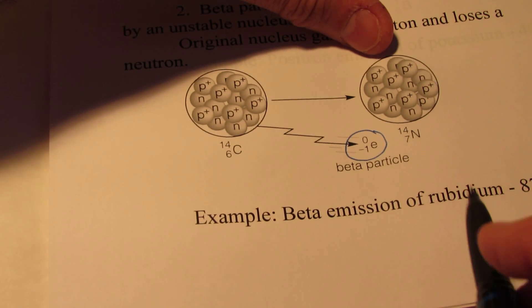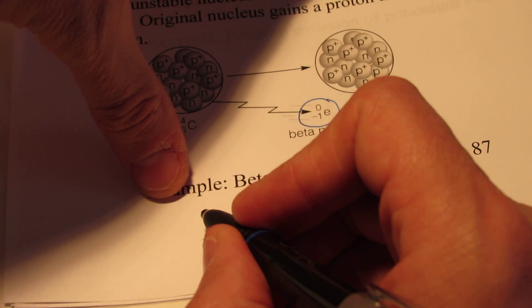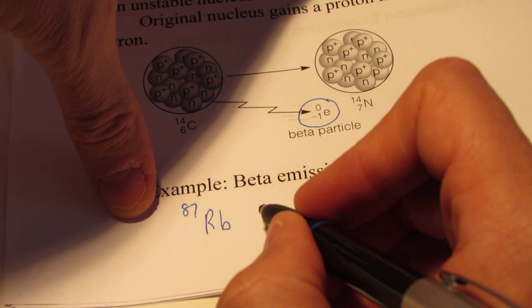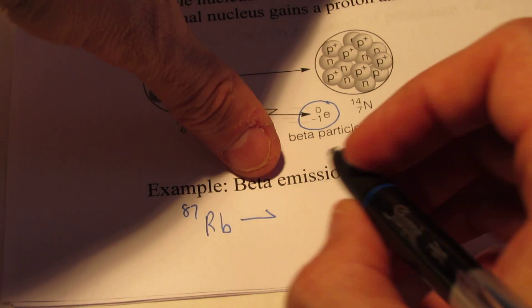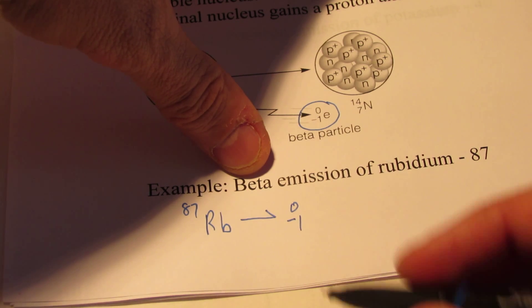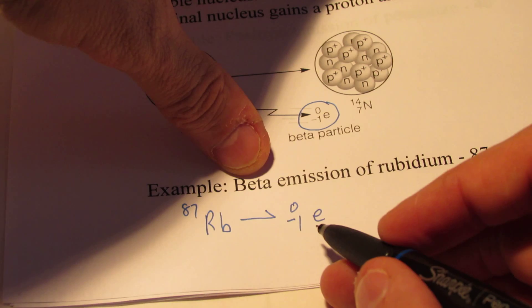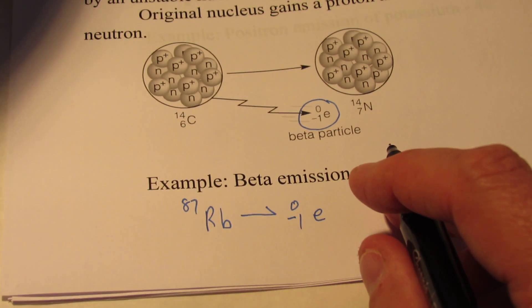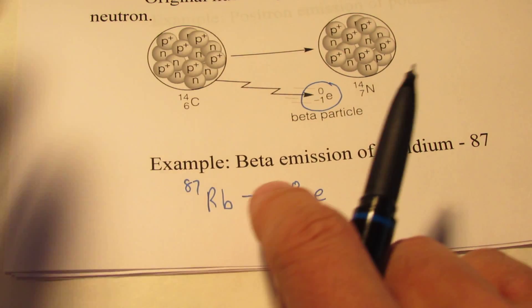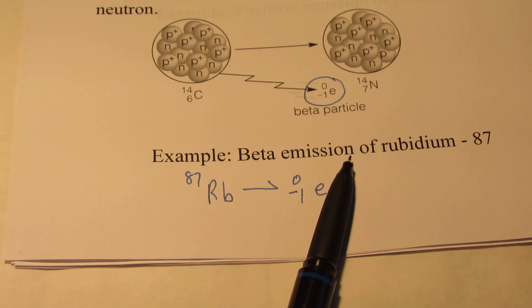Let's do another example. Let's take rubidium-87. Turns out that rubidium, Rb, atomic number 87, is radioactive. It emits a beta particle. So we're going to symbolize that with 0 over negative 1 and a small letter e, symbolizing that a neutron is ejecting an electron and creating a positively charged particle. Let's look up the atomic number for rubidium quickly, and it has an atomic number of 37.